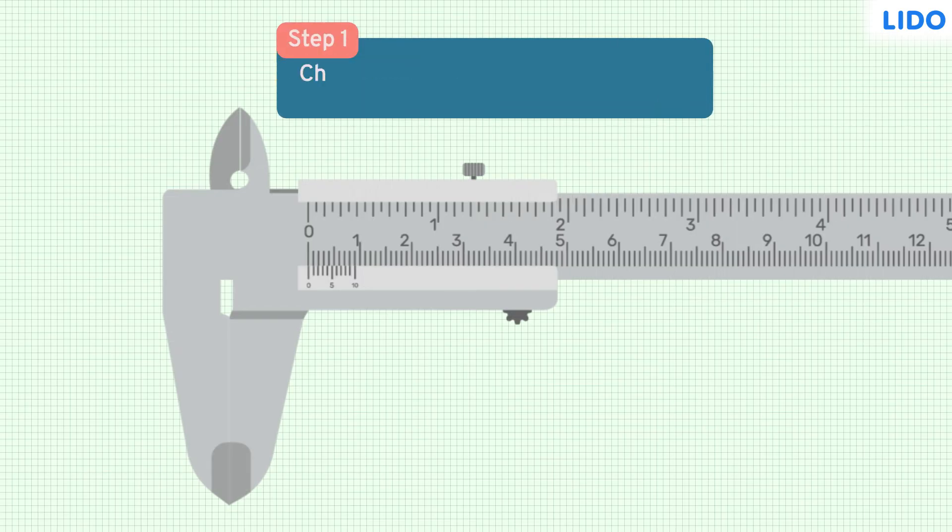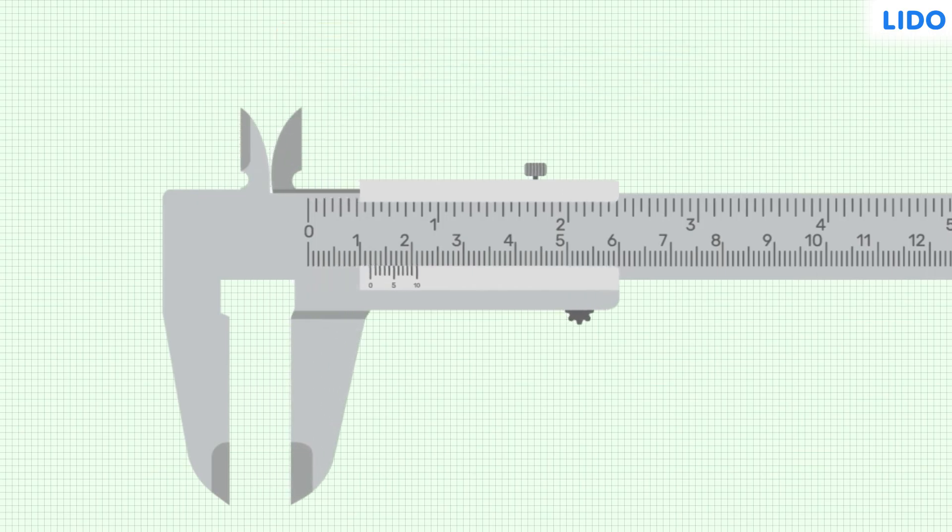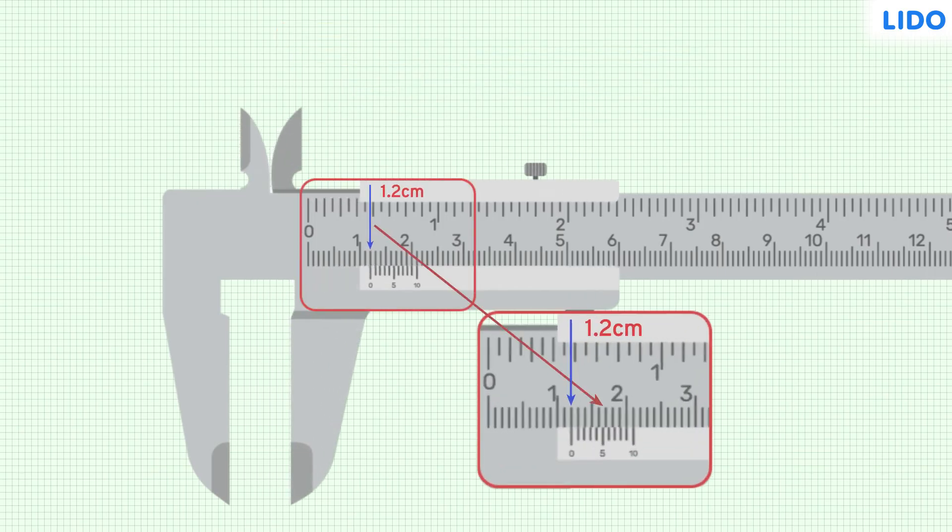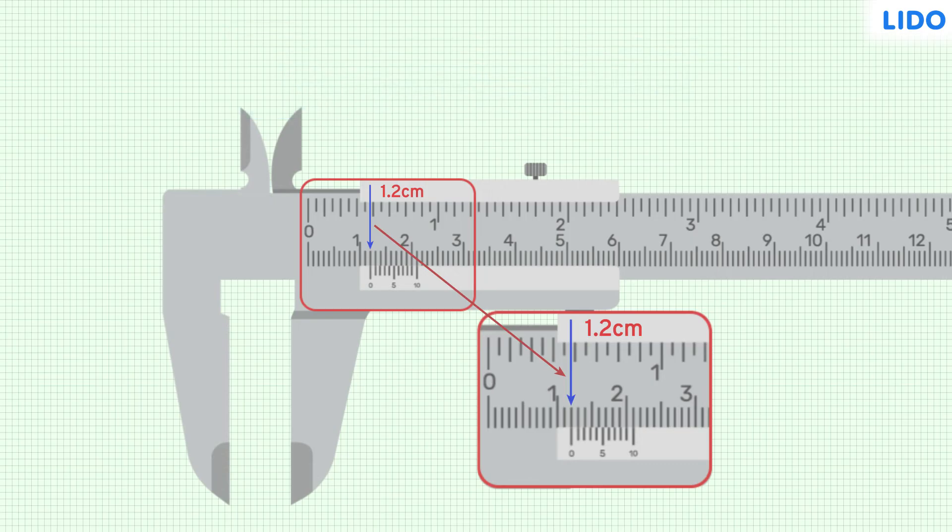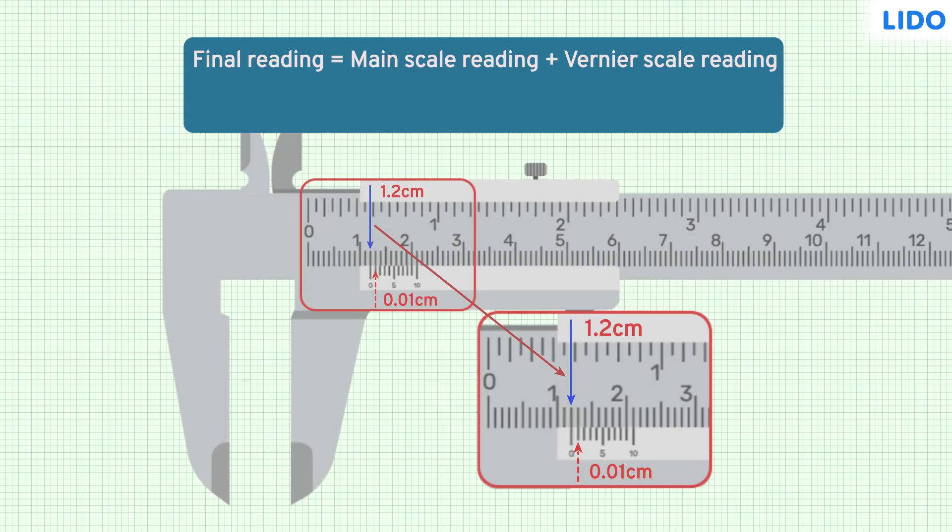First, we will check at what value on the main scale is the zero reading of Vernier caliper coinciding. Here, it is 1.2 cm. Then we check which Vernier scale reading is coinciding with the main scale. Here, it is the first division. Remember, with every next division, the Vernier scale trails by 0.01 cm. That means the value is 0.01 cm. So, the final reading will be the addition of the two values that are 1.21 cm.